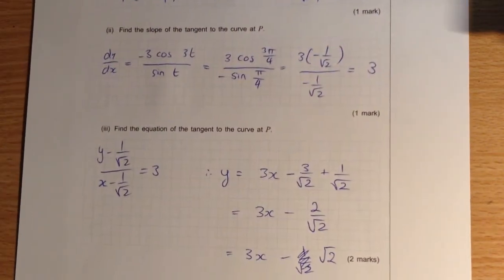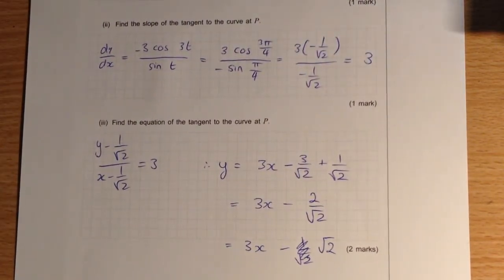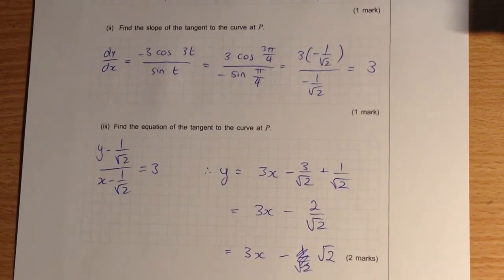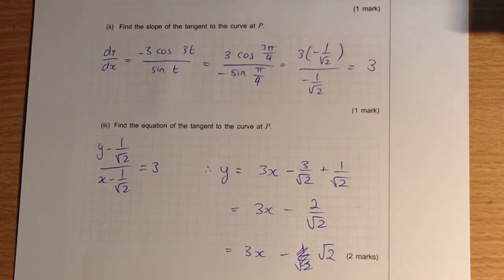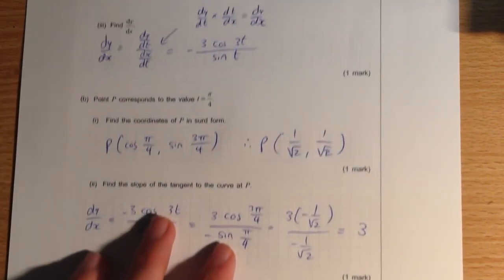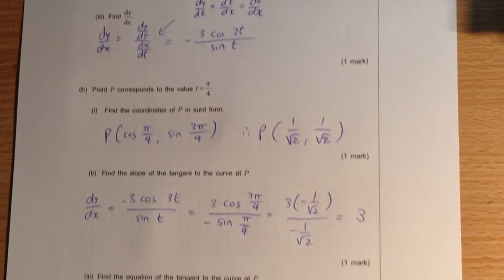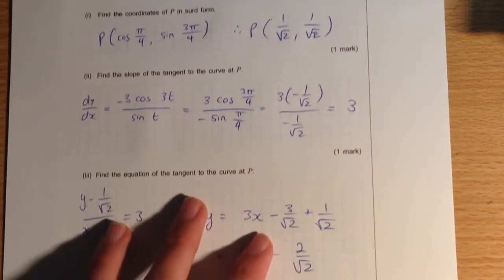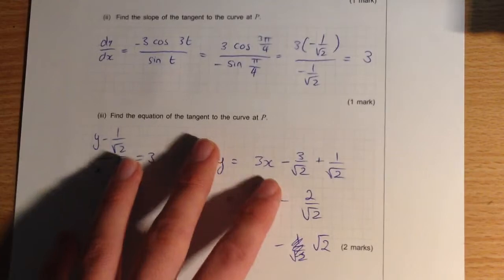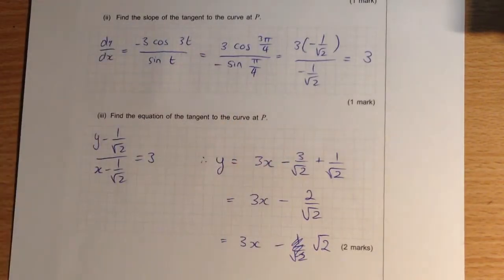Okay, so now we find the slope of the tangent to the curve at the point P. So in order to do this, we consider our dy/dx, because that is going to be indicative of the slope. And in order to find the slope of the tangent at that point, we simply substitute in π/4. So we end up with 3 cos 3π/4 divided by negative sine π/4.